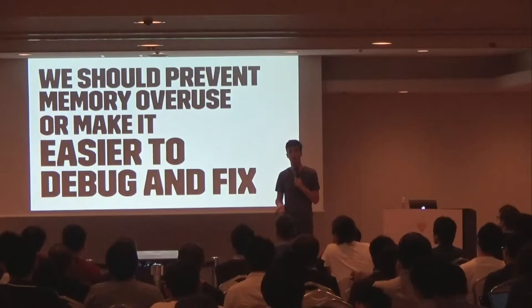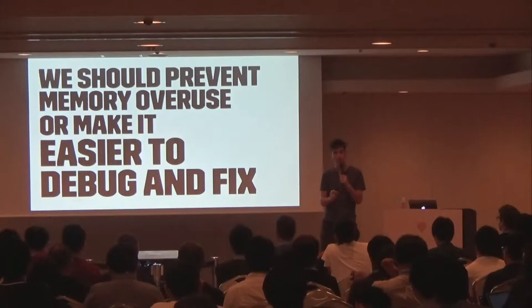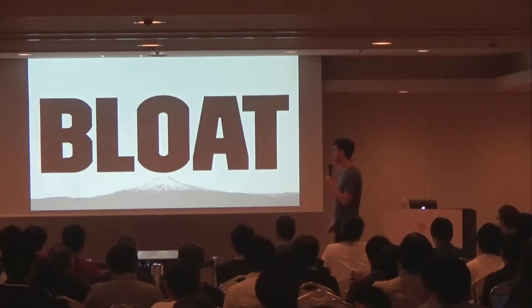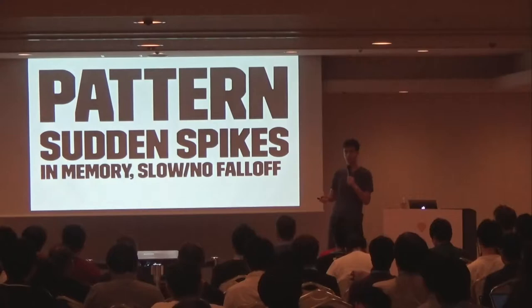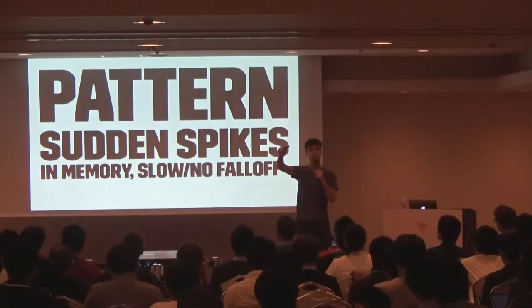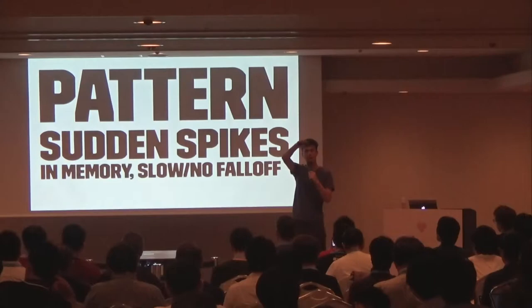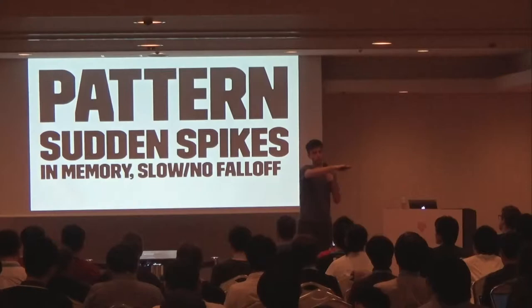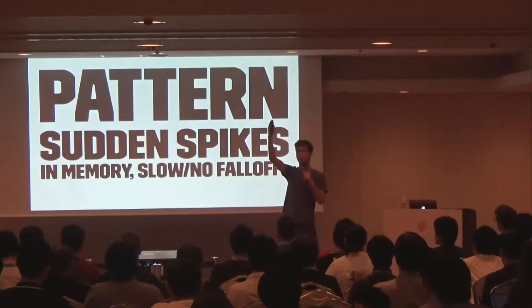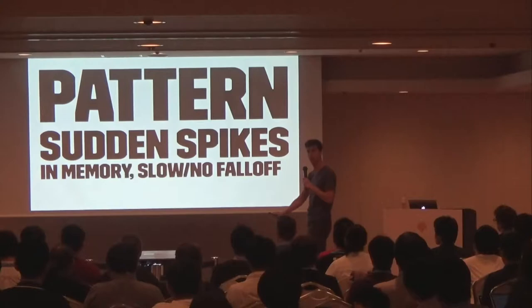As Rubyists, we don't want to think about memory. So we should either make these problems happen less often or make them easier to understand, debug, and fix. I call memory bloat this pattern of having constant memory usage in an application and then seeing a sudden spike — maybe even doubling memory usage — and then that tends not to fall off. It tends to stay at that new level; before it was 512 megabytes per process, and now suddenly you're using one gigabyte per process.